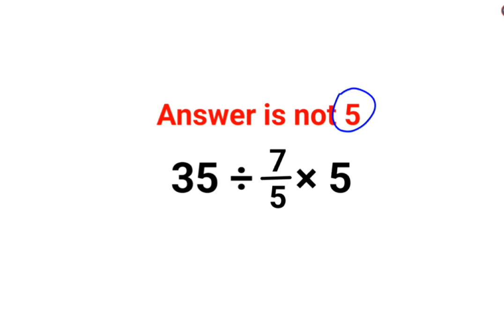Because 35 divided by 7 upon 5 multiplied by 5, so this gets cancelled. You are just left with 35 divided by 7. The answer for that one would have been 5.